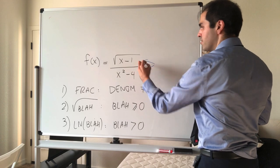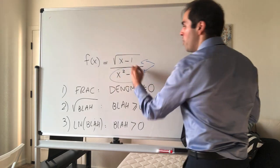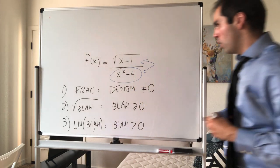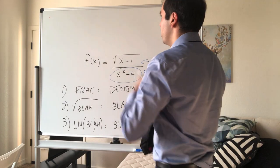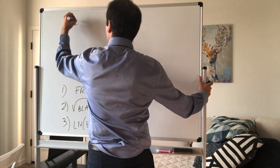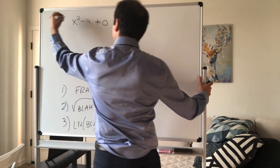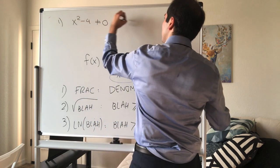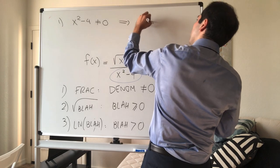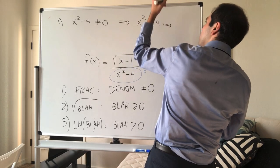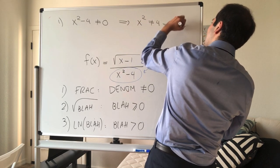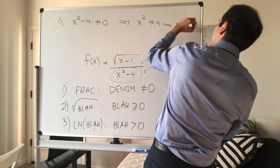So in particular, what we want, we want x squared minus 4 to be non-zero. And that gives you x squared is not equal to 4. And if you take square roots, we get x is not equal to plus or minus 2.